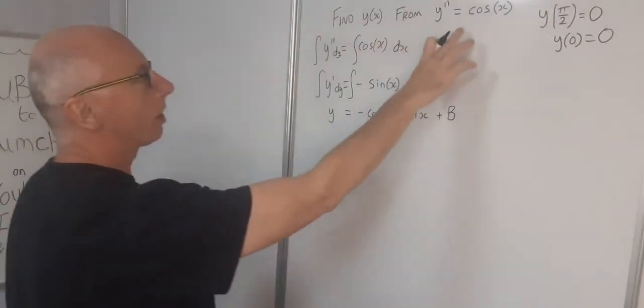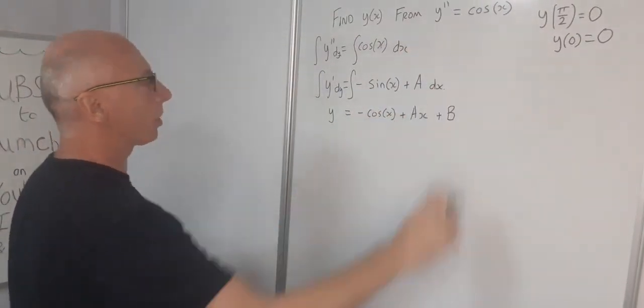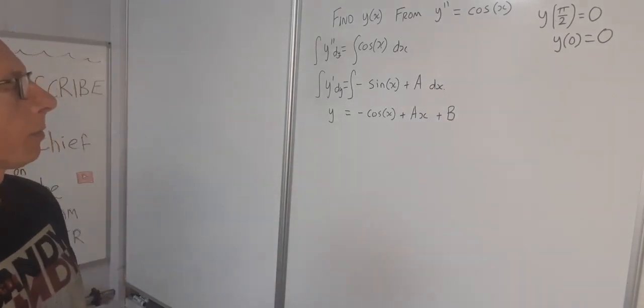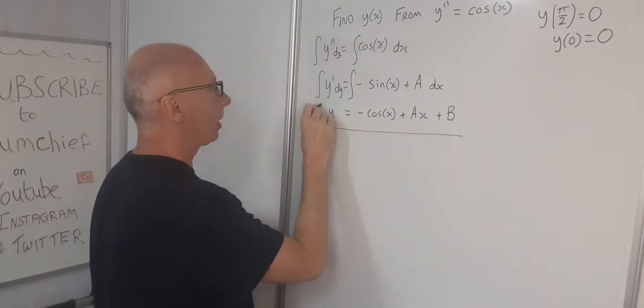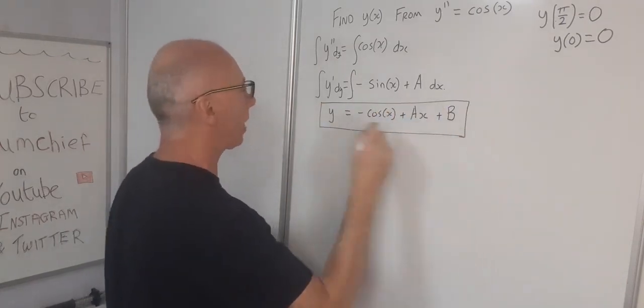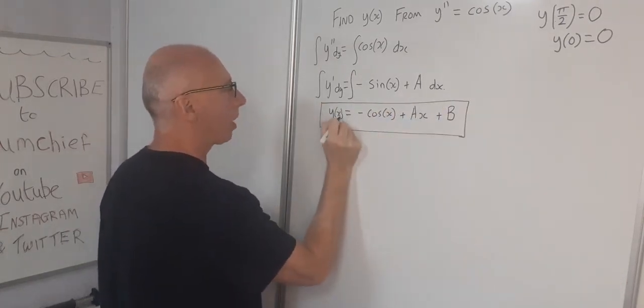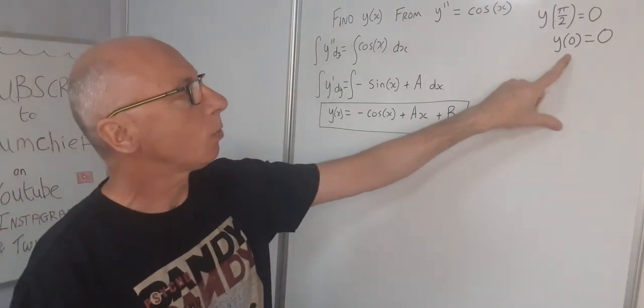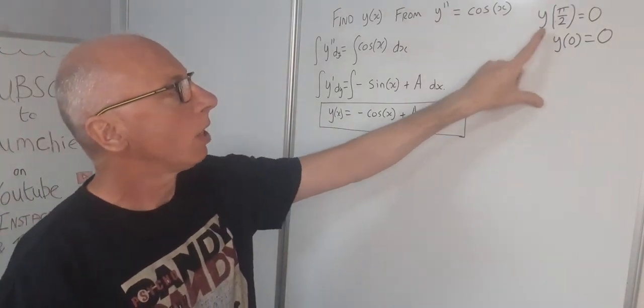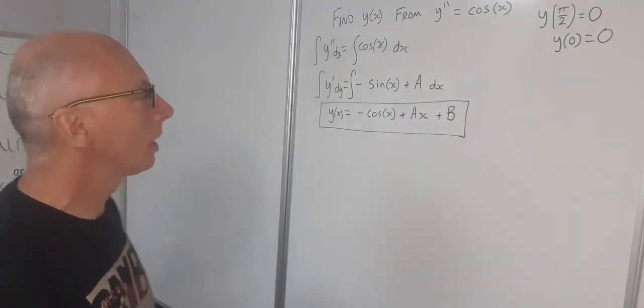So that's our differential equation solved. So let's just leave that there like that for now. And y is a function of x. So we can write y of x equals this. So next things we're left with is y of 0 is 0, y of pi over 2 is 0.